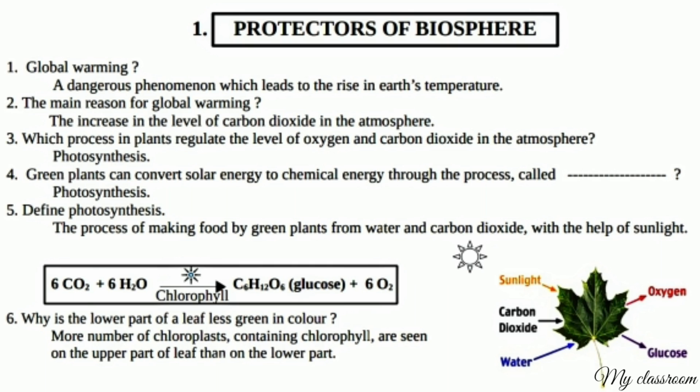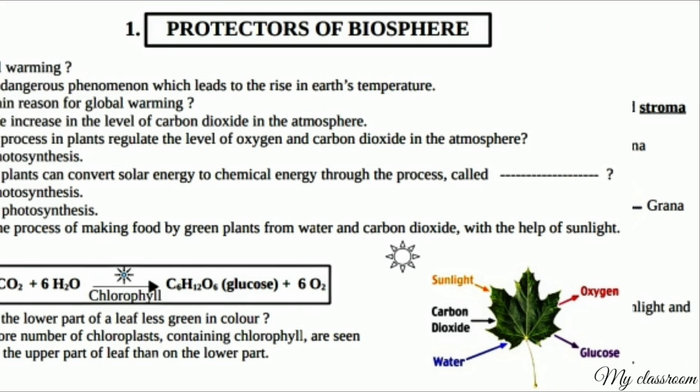Why is the lower part of a leaf less green in color? More number of chloroplasts containing chlorophyll are seen on the upper part of the leaf than on the lower part.